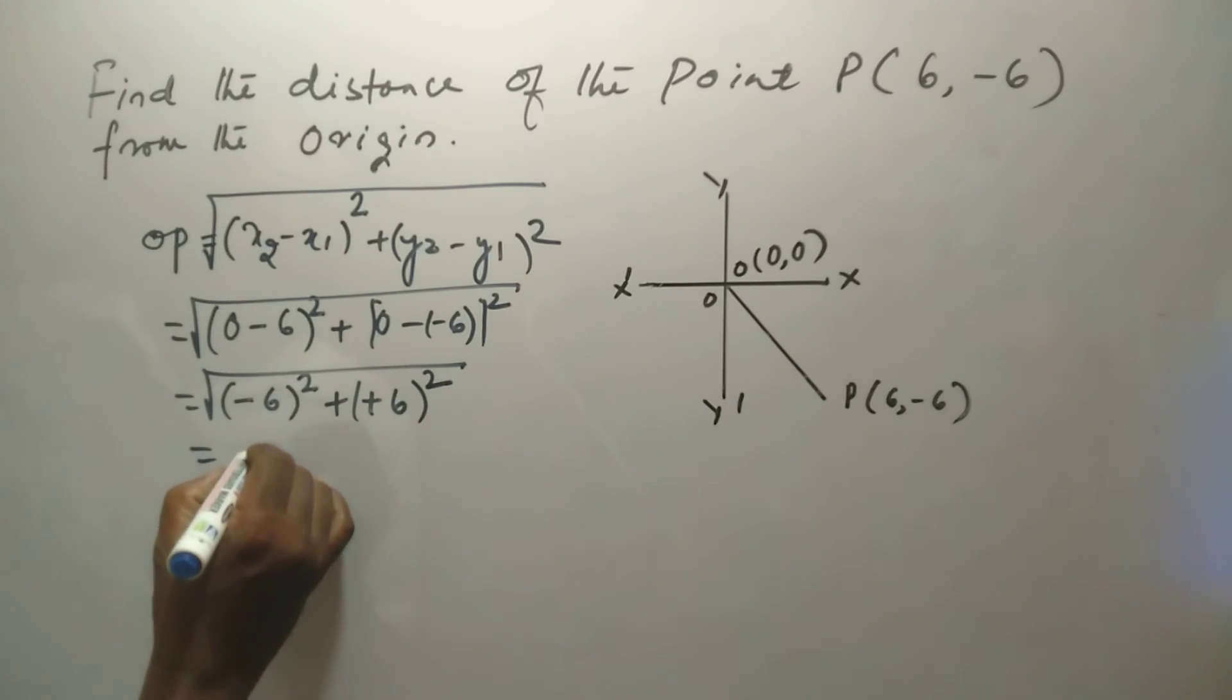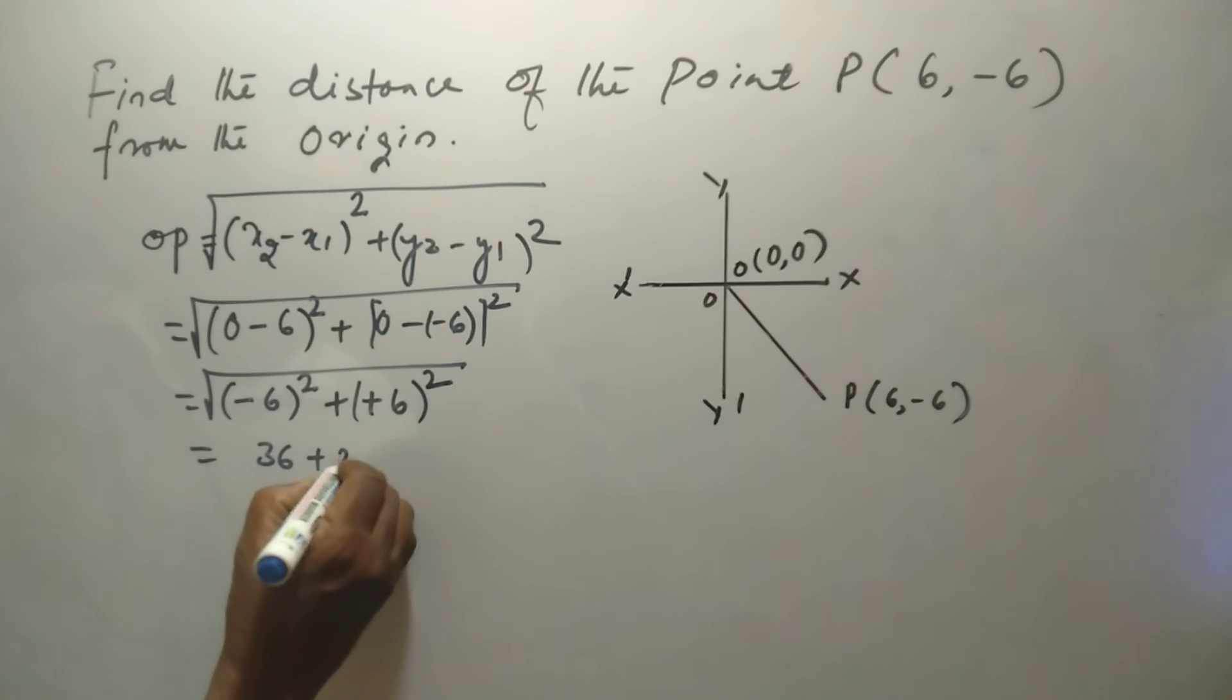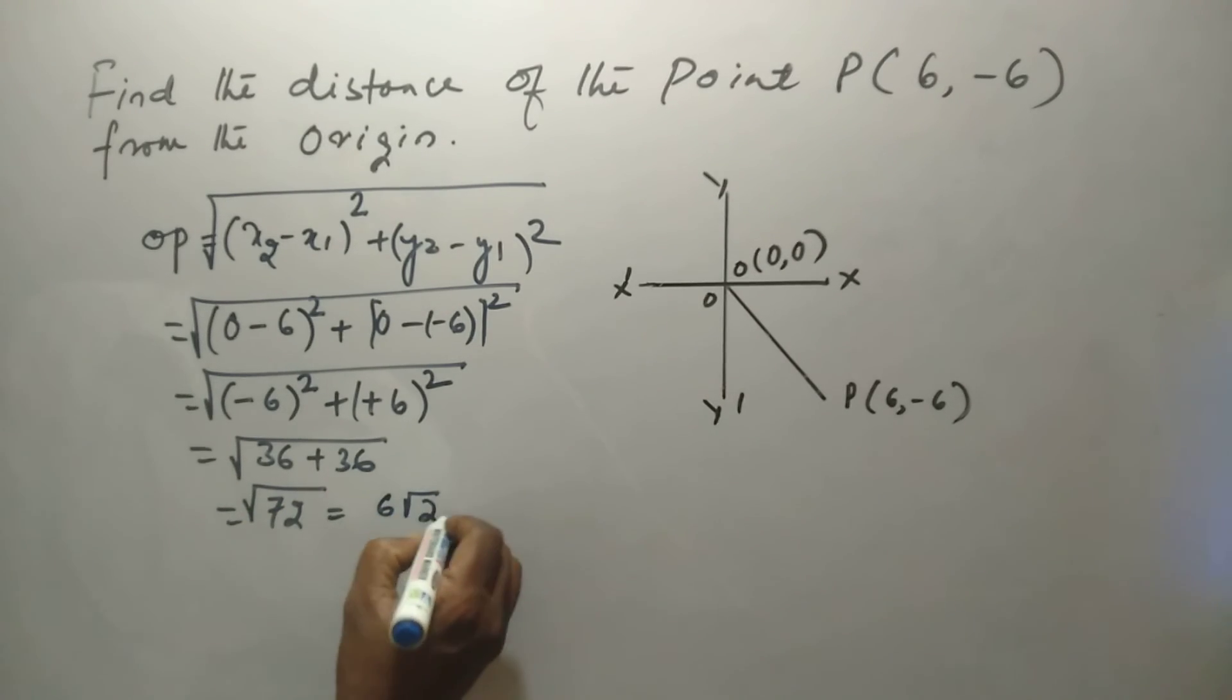Finally, this is 36 plus 36, 72 under root. Now, it is 6 root 2, the distance.